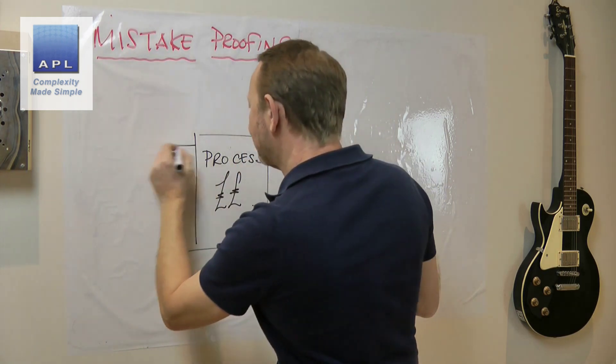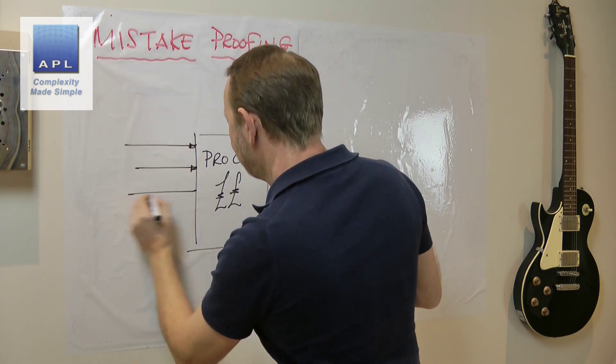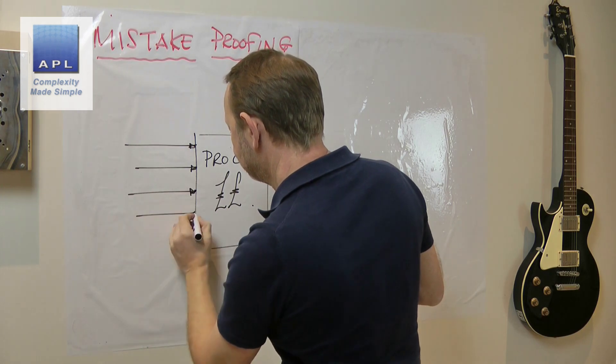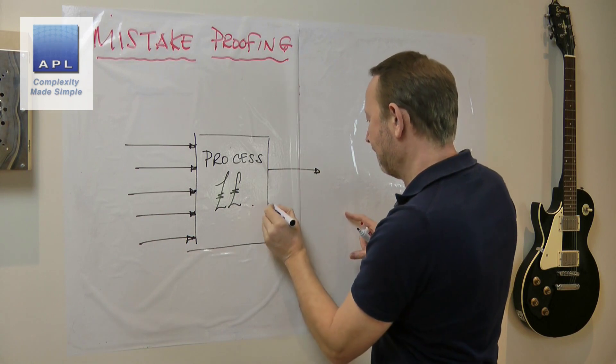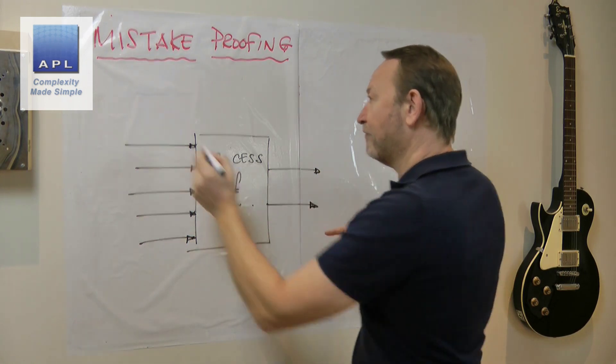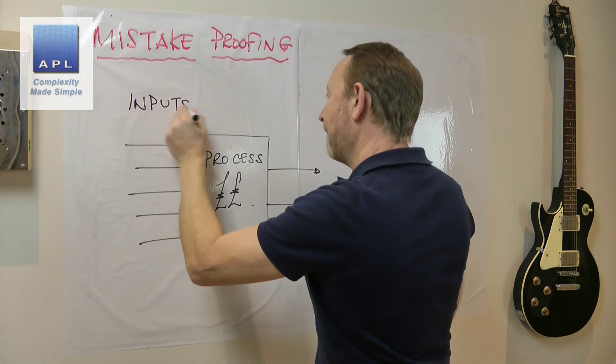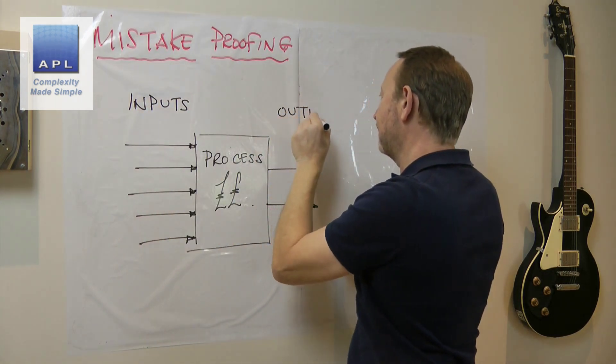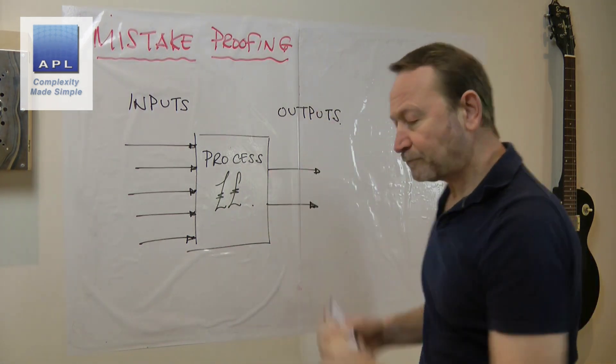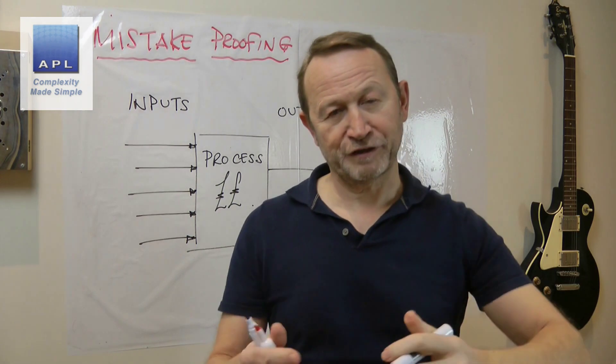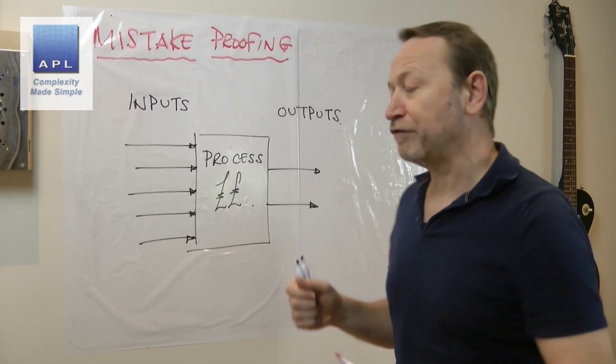Here's your money-making process. We have inputs, we have outputs. Okay, now let's apply mistake proofing to this diagram.